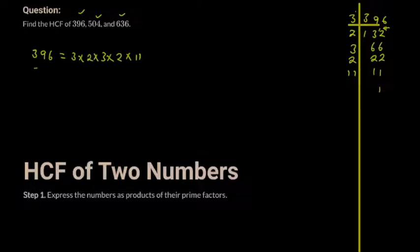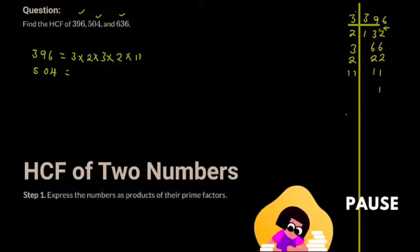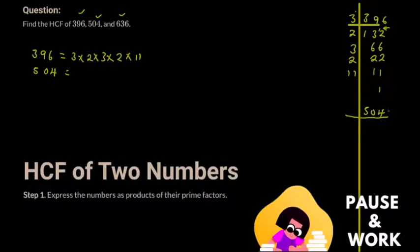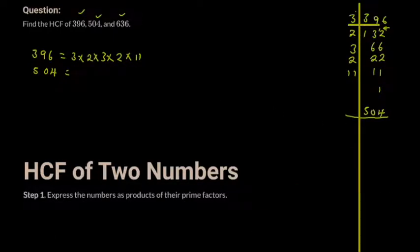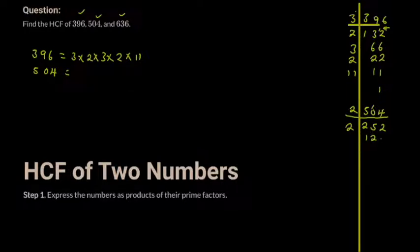We can do the same for 504. I'll draw the T-diagram and write 504. Two is definitely a factor, so I start with two: two into 504 gives 252, two into 252 gives 126. Two keeps working because the number keeps ending in an even number.